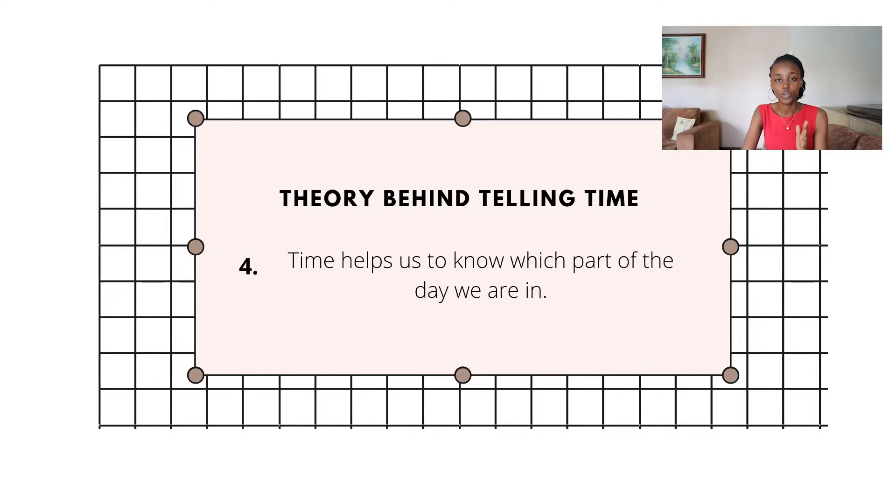The fourth and final fact that your child needs to know is that time helps us to understand which part of the day we are in — it helps us to see which hour we are in out of the 24. This is just a rough guide, so take the time to think about how you're going to explain these facts to your child using your own simple and easy-to-understand words.